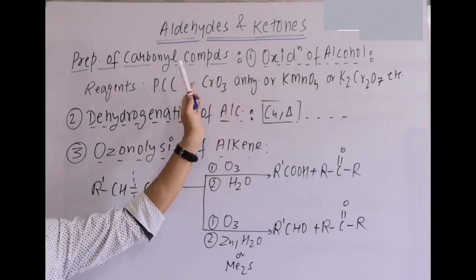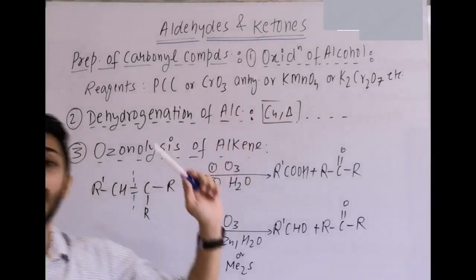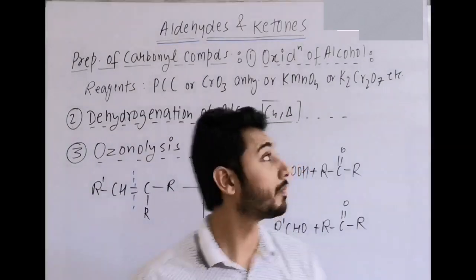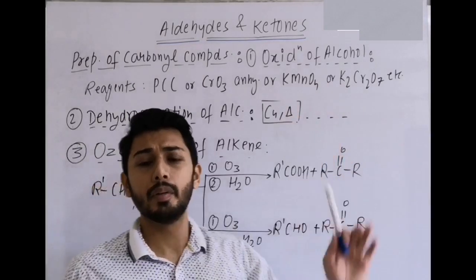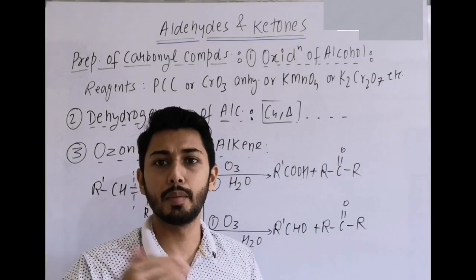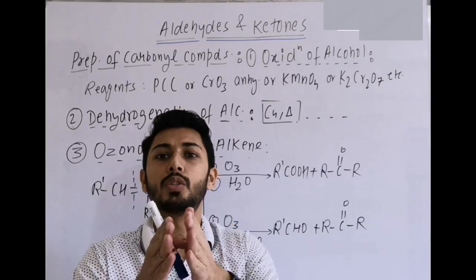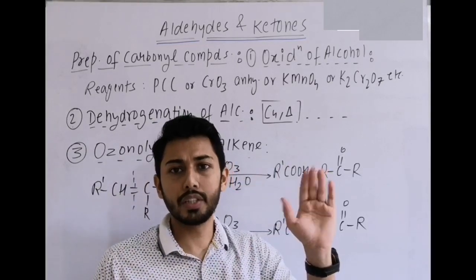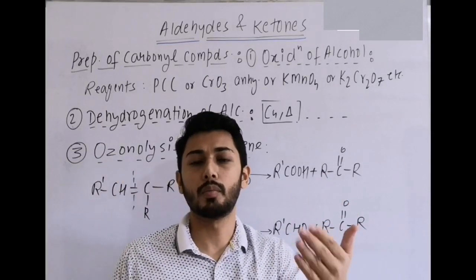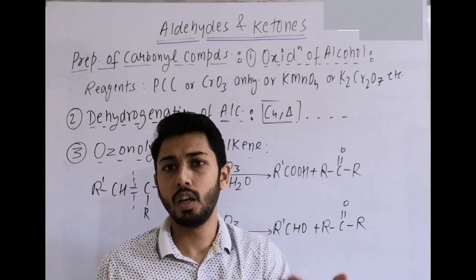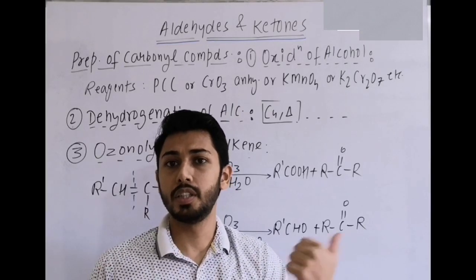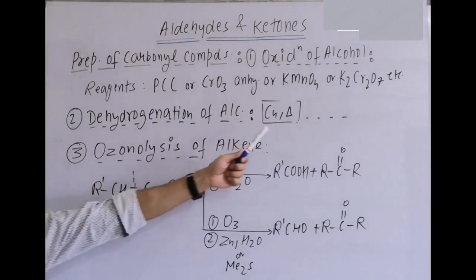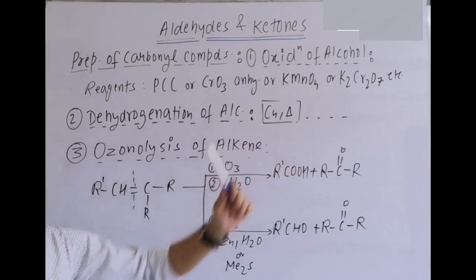Collins reagent works similarly. KMnO4 oxidizes primary alcohol to carboxylic acid and secondary alcohol to ketone; tertiary alcohol gives no reaction with KMnO4. Chromate works the same way. If ketone is treated with vigorous KMnO4 oxidation, the ketone cleaves into carboxylic acids. CrO3 or Collins reagent gives aldehyde from primary alcohol; secondary alcohol gives ketone.